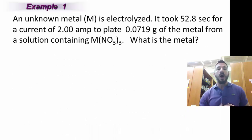Here's our first problem. An unknown metal M is electrolyzed. It took 52.8 seconds for a current of 2 amps to plate, wow that's not very much, 0.0719 grams of the metal from a solution containing that metal nitrate.